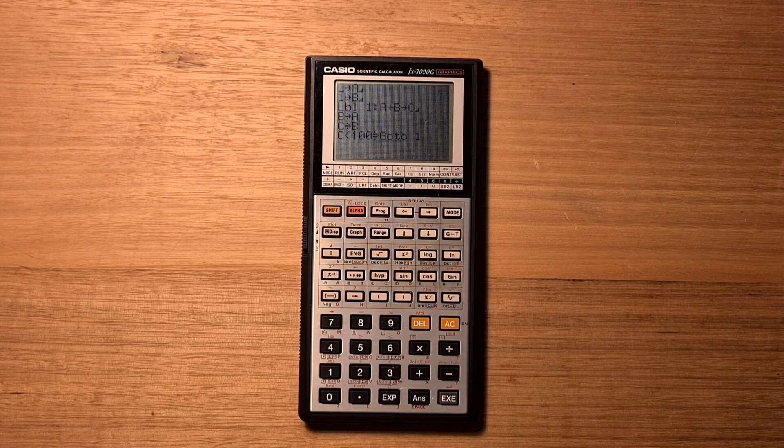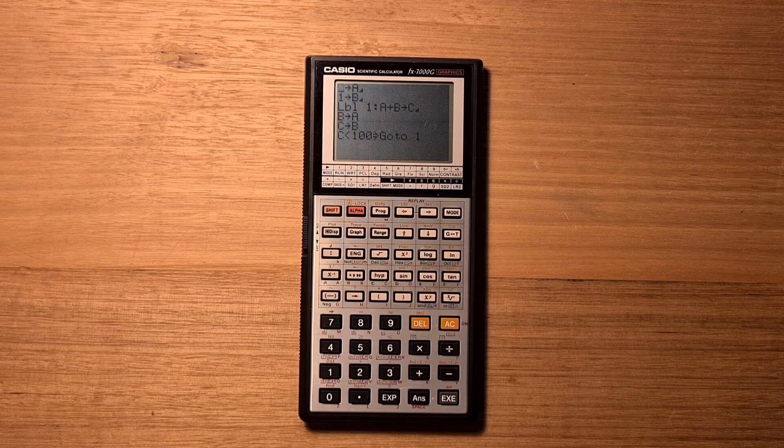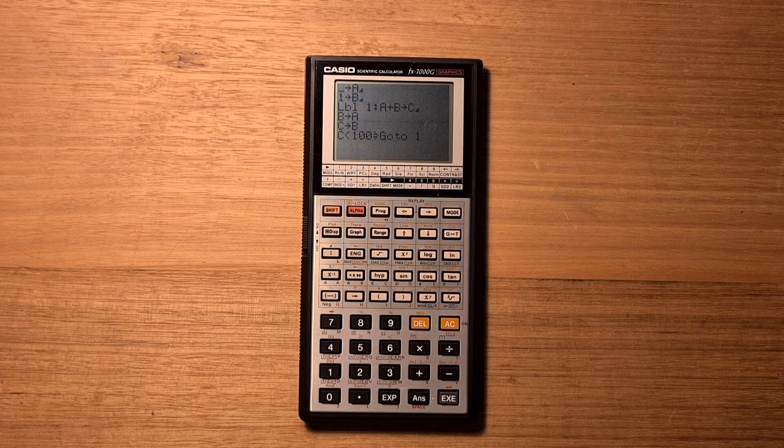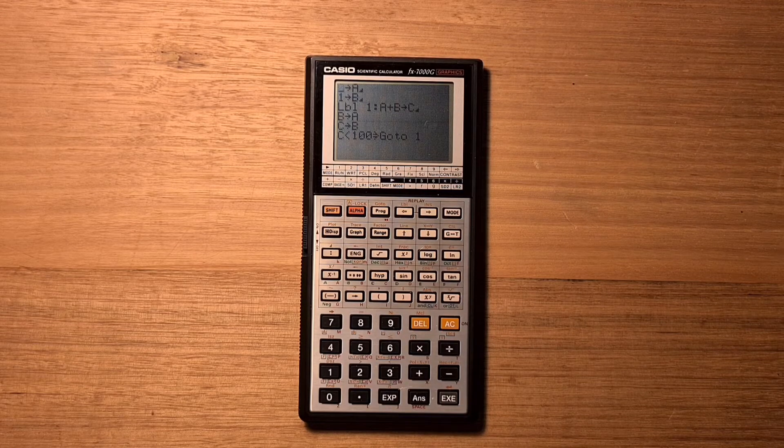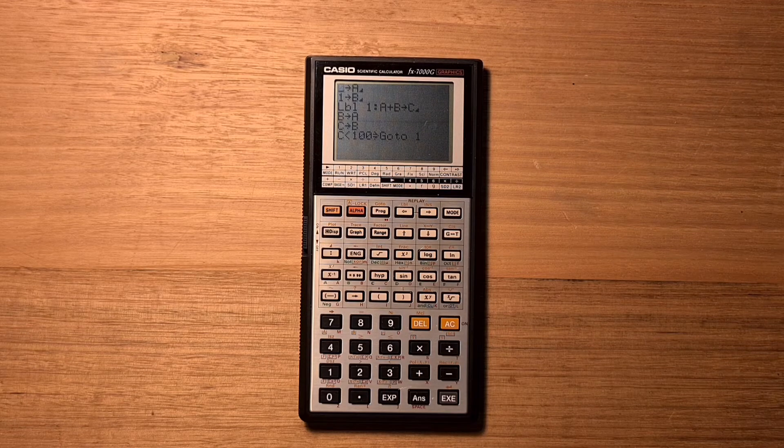The triangle symbol at the end of some lines of code tells the calculator to print out the result. And then the program defines a label called 1 for a loop and assigns the next number in the series into C and prints it.